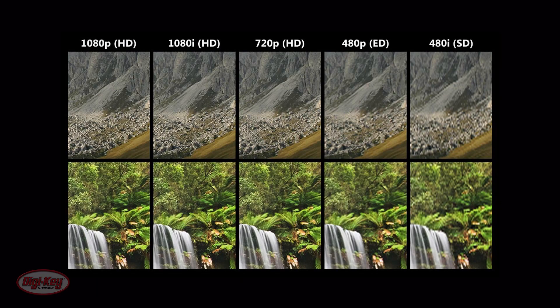A few common resolution types are 480p, 720p, and 1080p, as well as 480i, 720i, and 1080i. The numbers represent the number of horizontal lines that create the image, whereas the letters describe the type of scan used to display the image, either progressive or interlaced.